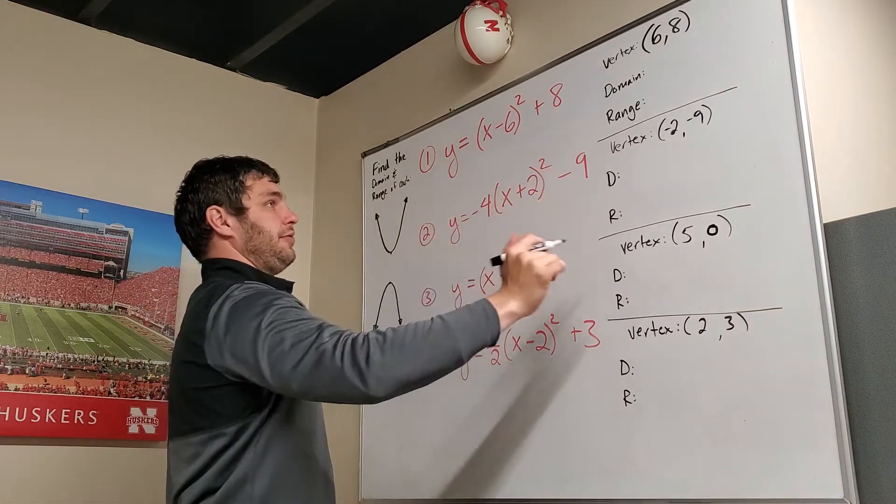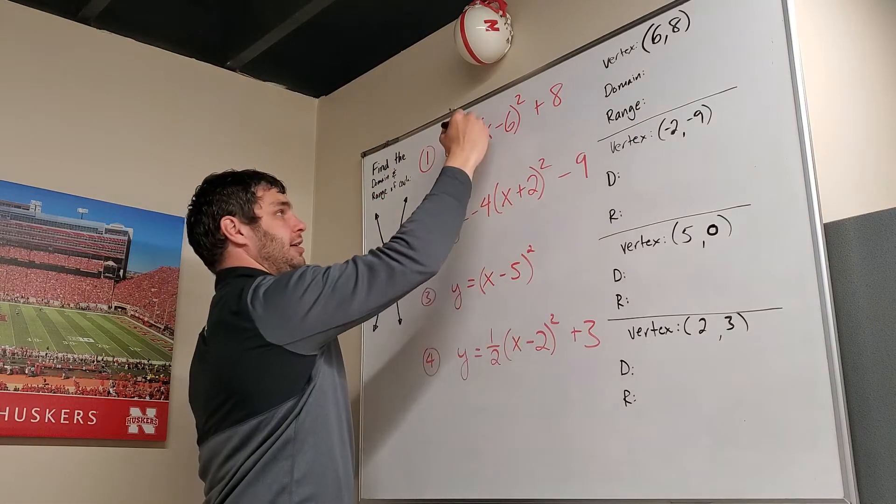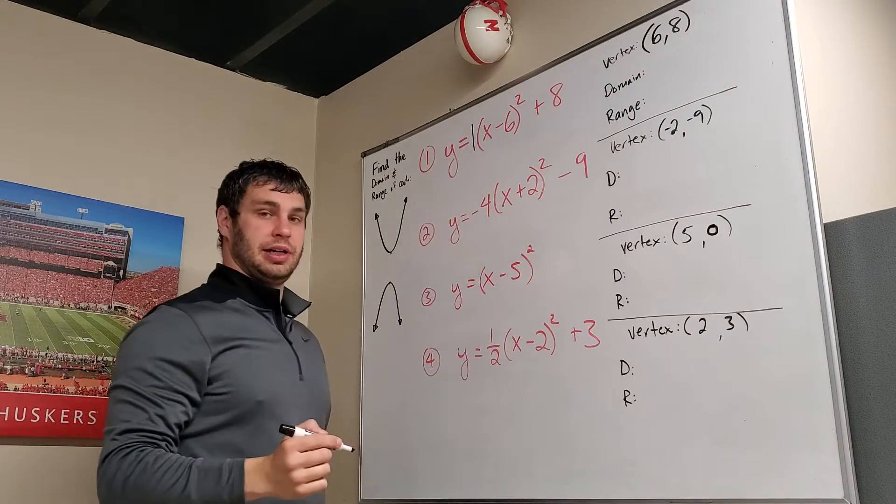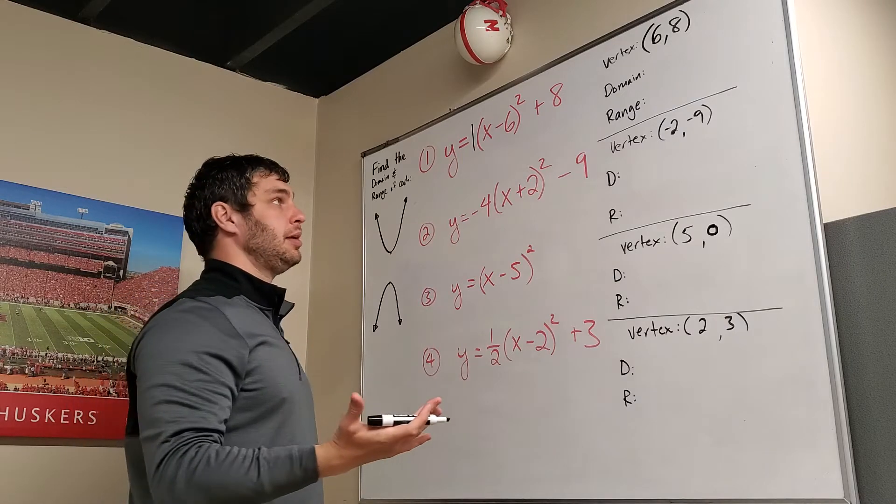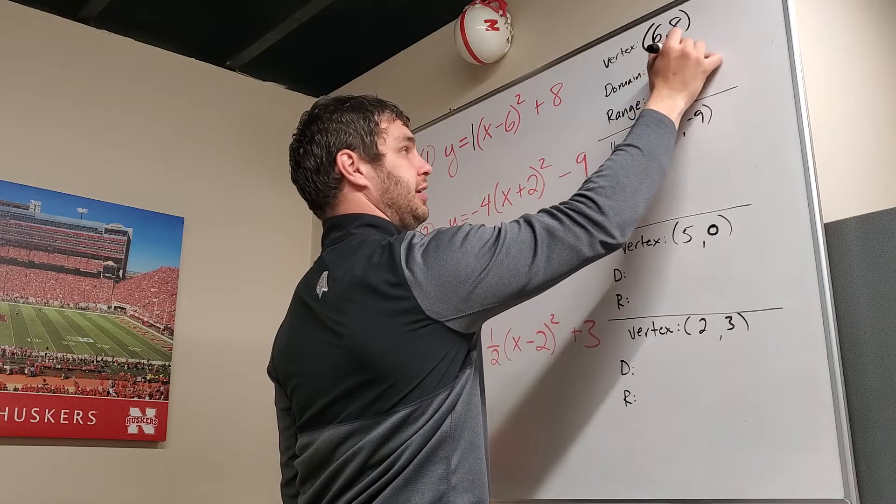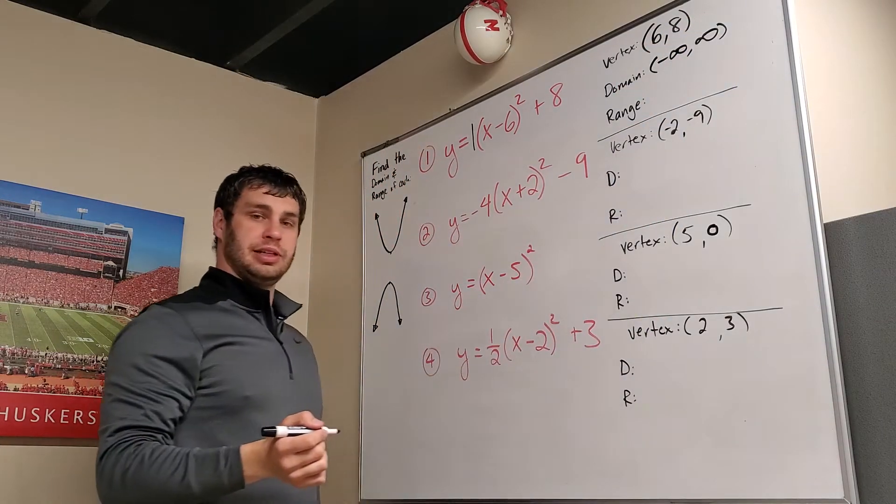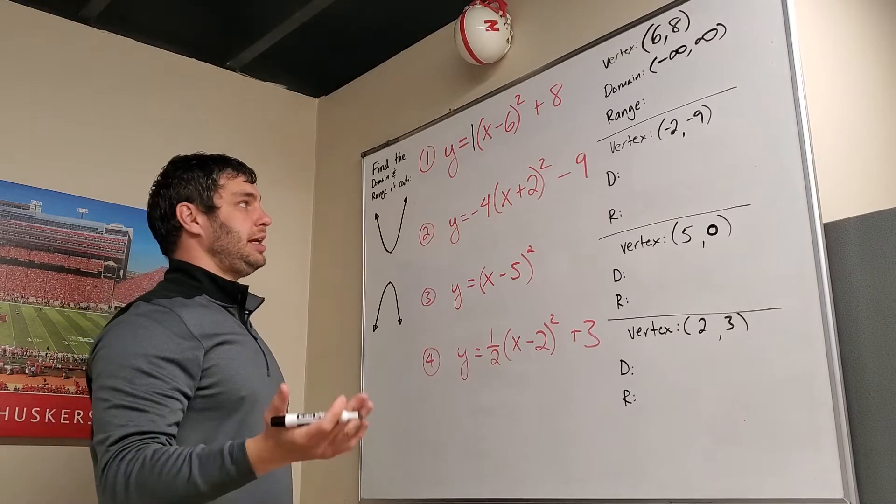This first one, I found the vertex is (6, 8), and we also know that right here is a positive value. So that means this is going to open up, and if that opens up, the domain on that can be from negative infinity to infinity.